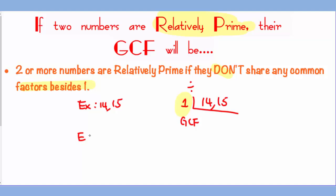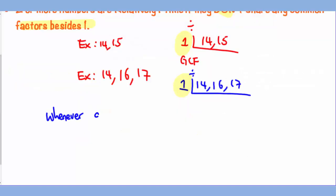Another example with 3 numbers can be 14, 16, and 17. Notice how there's no common factor amongst all 3 numbers besides 1. So the only thing you can factor out of the 3 is 1. Guess what? Whenever a group of numbers are relatively prime, their GCF will always be 1.